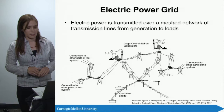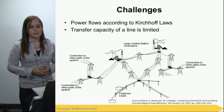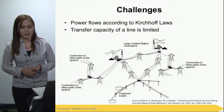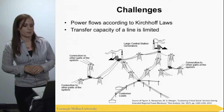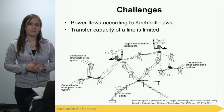A key challenge is that power flows according to Kirchhoff's laws — physical laws. That means power flow is determined by the line parameters and where power is injected, so we can't influence it very well. When we have parallel lines, part will flow over one line and the rest over the other. That wouldn't be a problem if lines had unlimited transfer capacity, but each line is limited — the maximum amount of power we can transmit is constrained.